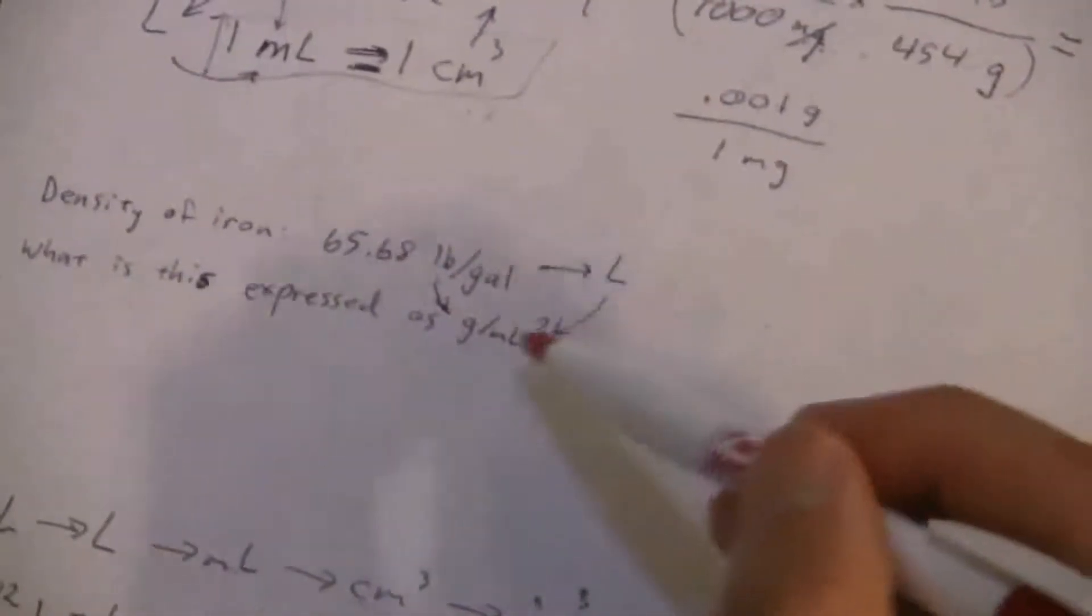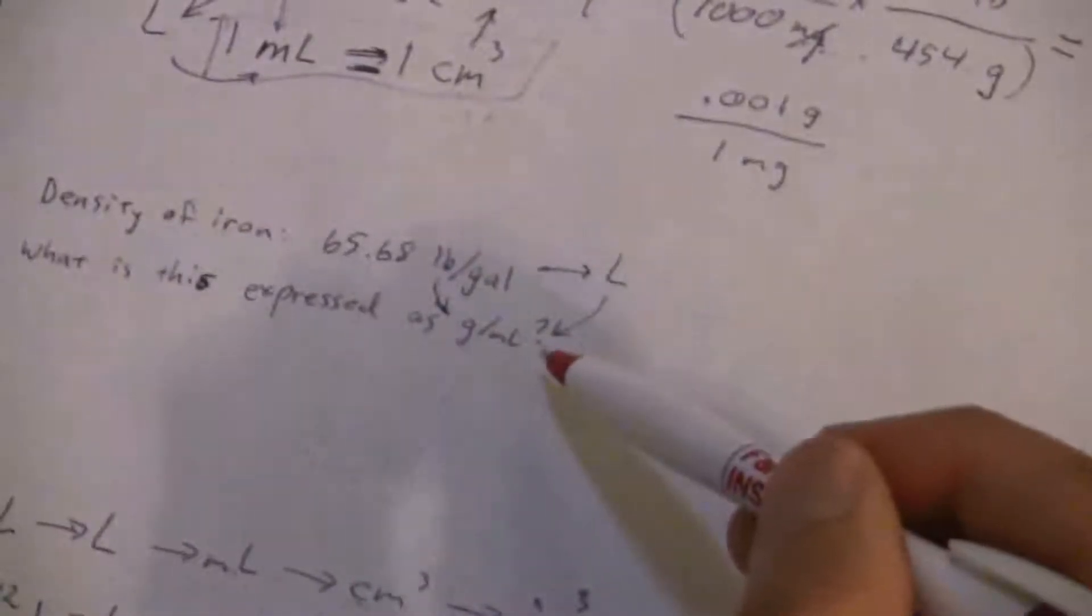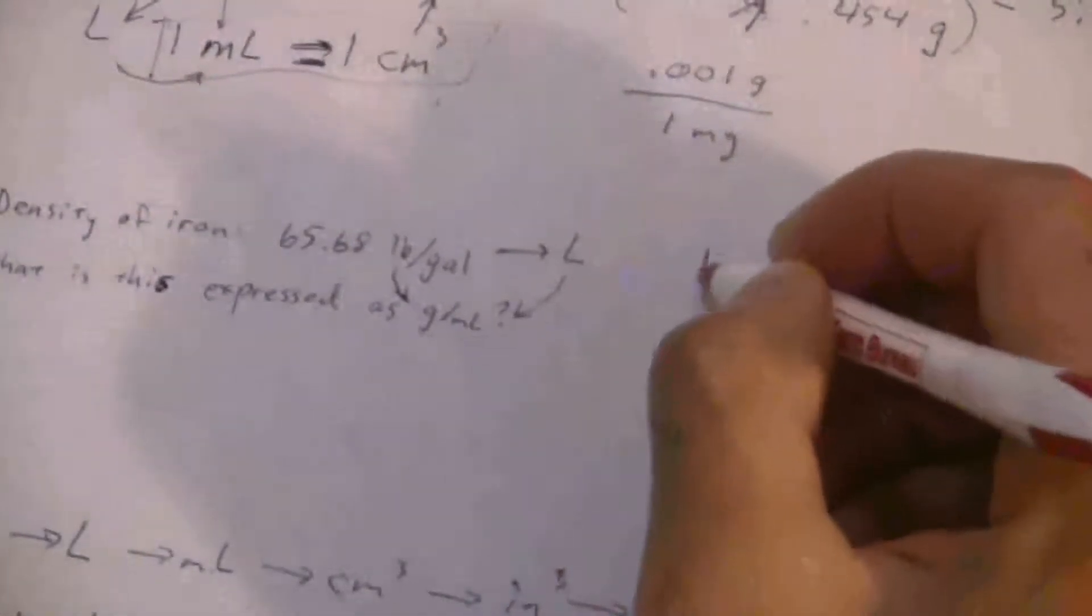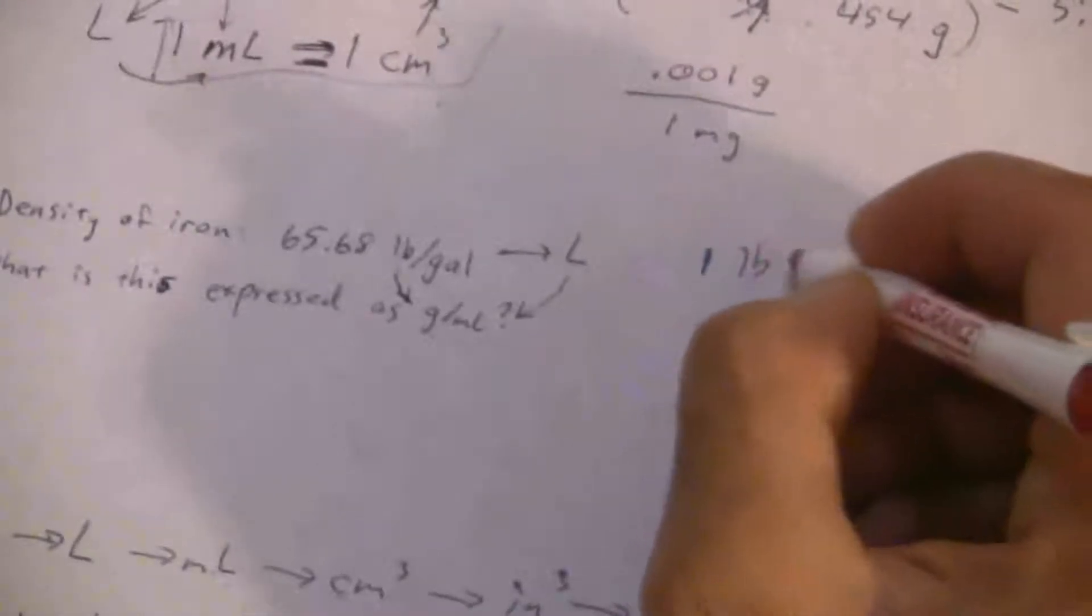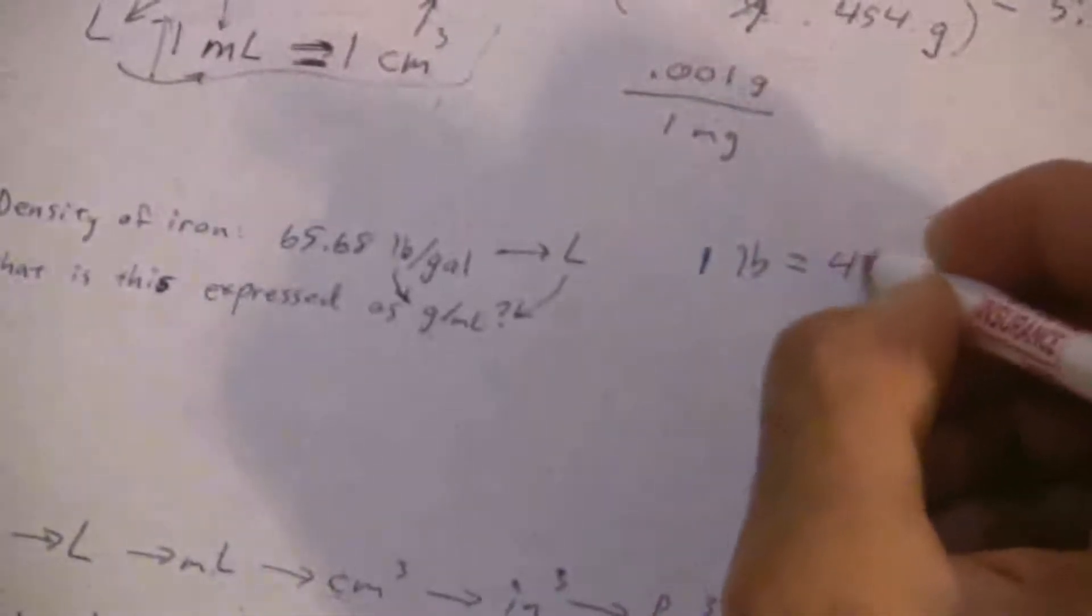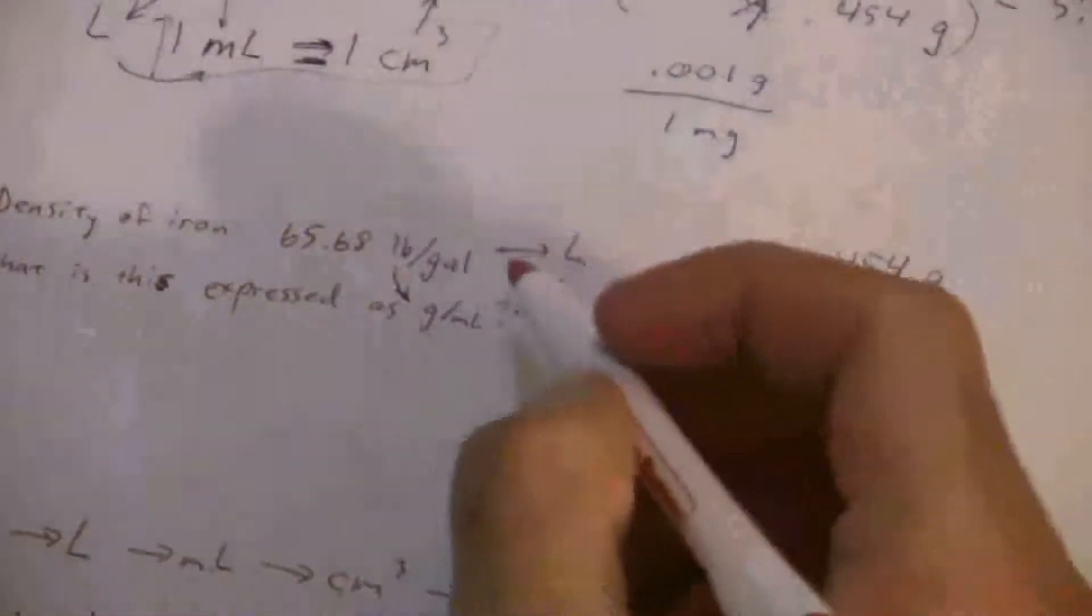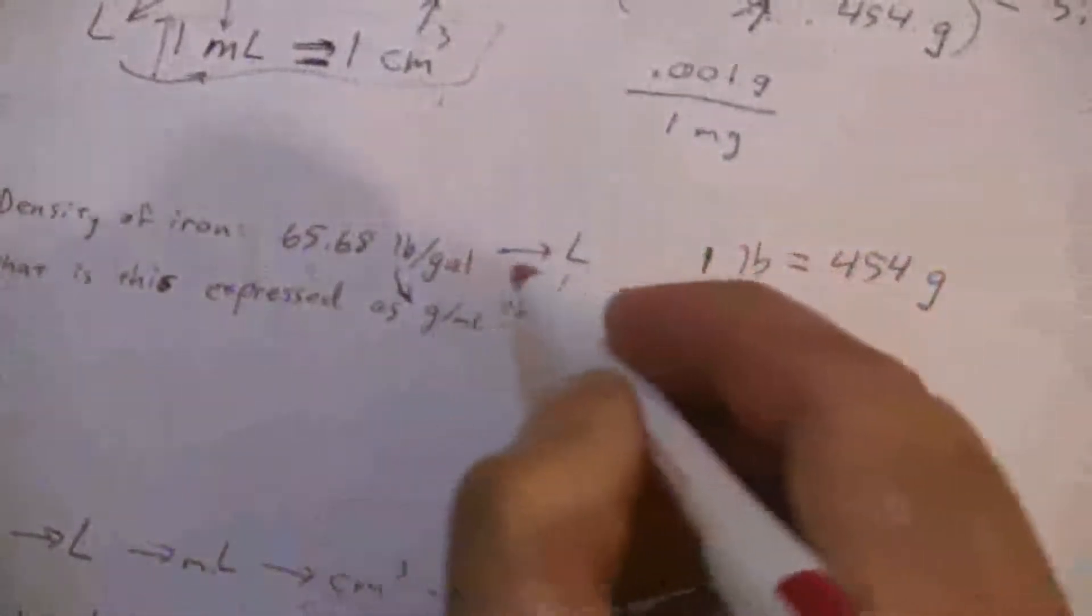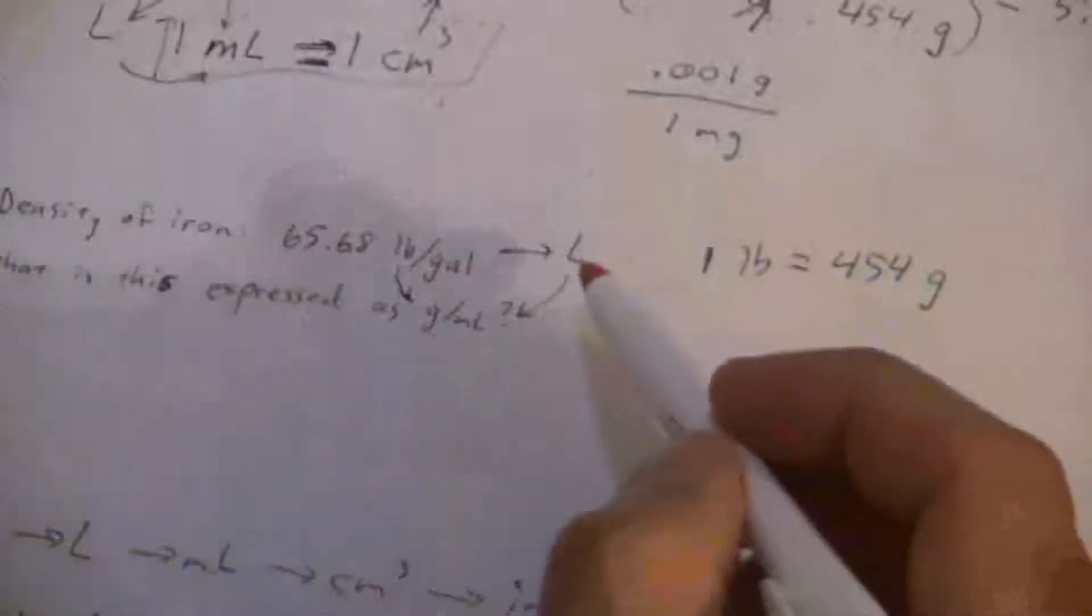First, now that we have our roadmap, we're going to go pounds to grams, gallons to liters to milliliters. We need to find those conversion factors. So pounds to gram, you might need to look that one up - I don't expect you to have that one memorized. One pound equals 454 grams. By the way, you're always welcome to memorize it but you don't have to.